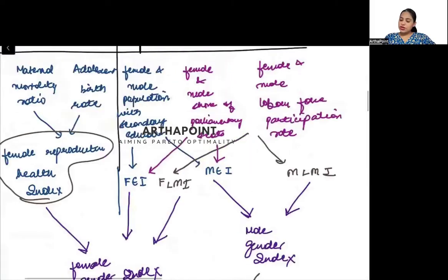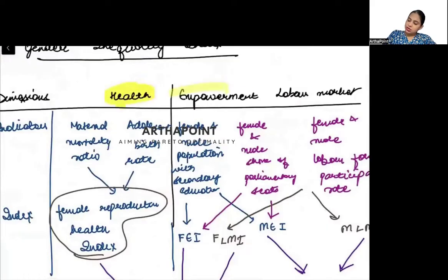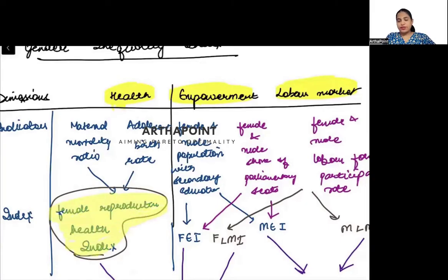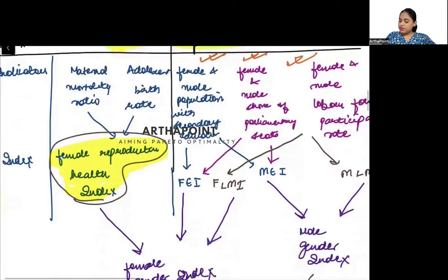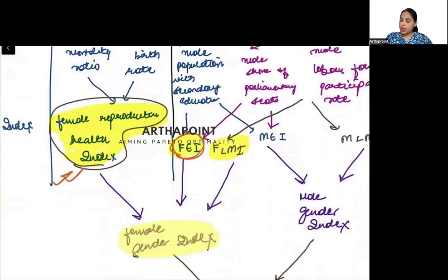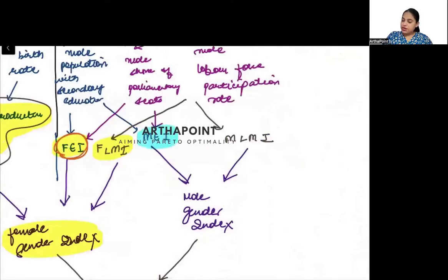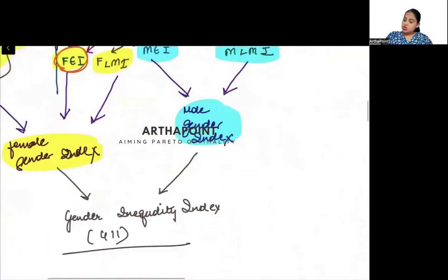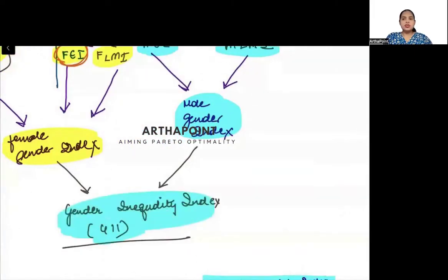So the Gender Inequality Index has three dimensions: health, empowerment, and labor market. Health is only used in finding the female reproductive health index. Empowerment and labor market are both for males and females. Combining the female reproductive health index, female empowerment index, and female labor market index gives the female gender index. Combining male empowerment index with male labor market index gives the male gender index. Together, these give the Gender Inequality Index.